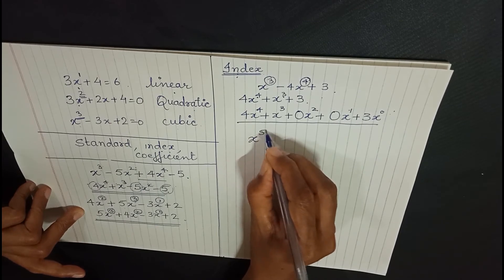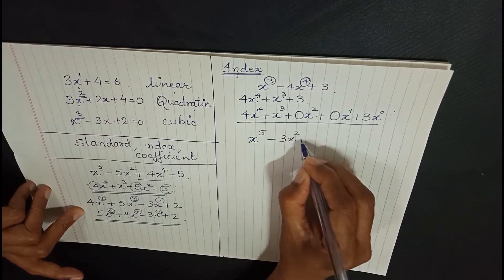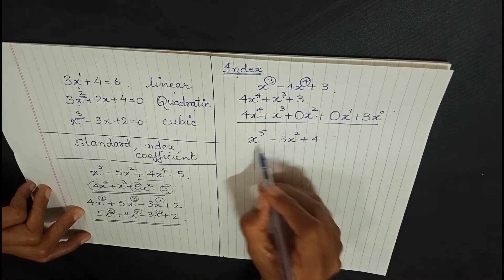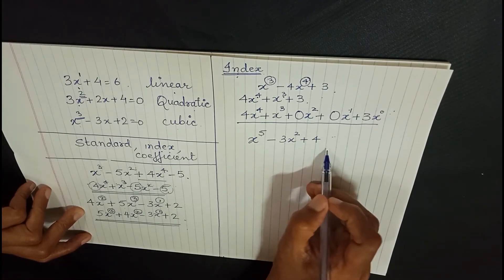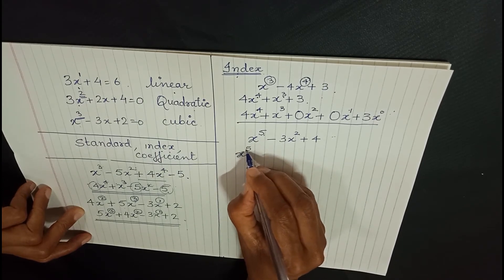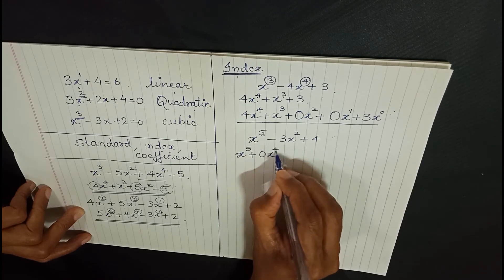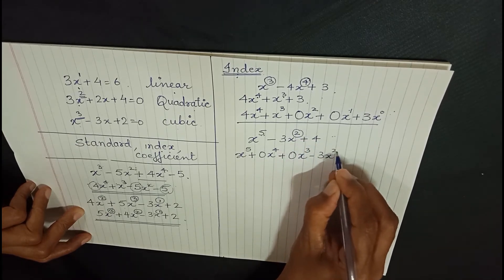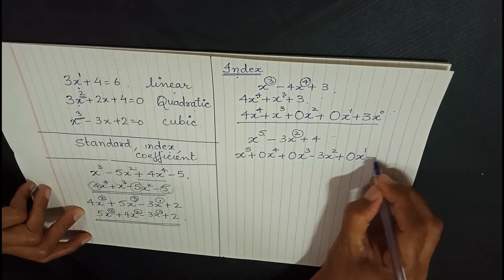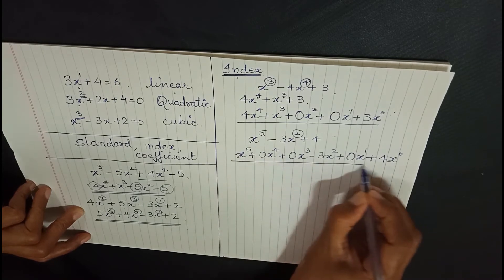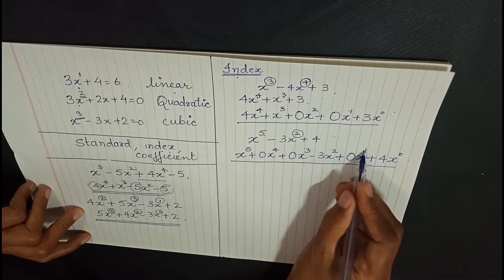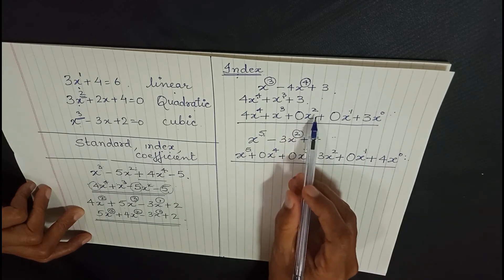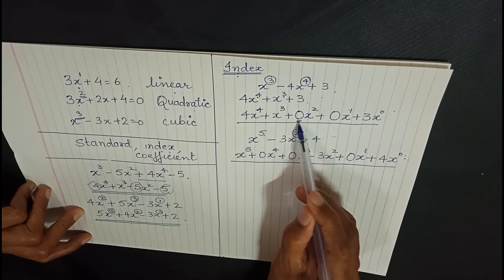Another example: x raised to 5 minus 3x squared plus 4. This is already in standard form with degrees 5, 2, and 0. We introduce all missing degrees: x raised to 5 plus 0x raised to 4 plus 0x cubed minus 3x squared plus 0x raised to 1 plus 4x raised to 0. Now degrees 5, 4, 3, 2, 1, and 0 are all present. Whichever degree is missing, we add it with coefficient zero.